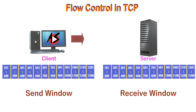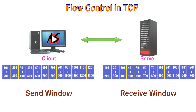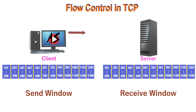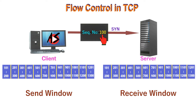To understand flow control, we assume that data transfer is unidirectional from client to server without any error. We will examine 8 segments exchanged between the client and server. The first segment is from the client to server — a SYN segment to request a connection. The client announces its initial sequence number, for example 100. When this segment arrives at the server, it allocates a buffer size of 800 bytes and sets its receive window to cover the whole buffer: 800.